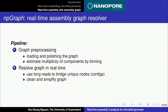We wanted a real-time assembly working on the assembly graph, so we developed NP-graph. It's a hybrid assembly working by resolving the assembly graph using nanopore long reads, still working in real-time with streaming input and output. The pipeline is divided into two main phases. First, the offline phase for graph preprocessing: you load the de Bruijn graph output by a short read assembler like SPAdes or Velvet, do some polishing to remove noise and calibrate metadata like coverage information, so that you can better estimate the multiplicity of the components by running a binning algorithm.